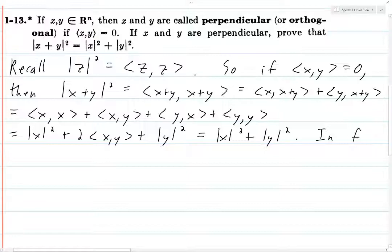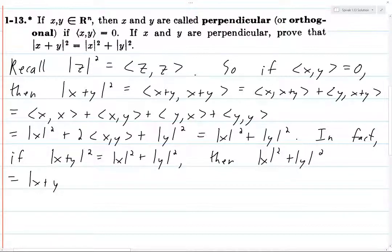So, in fact, if the norm of x plus y squared equals the norm of x squared plus y squared, then we can basically do this entire exercise backwards. So we get norm of x plus norm of y squared.